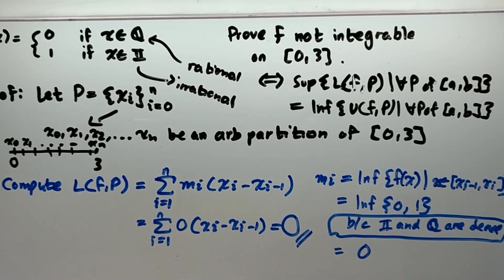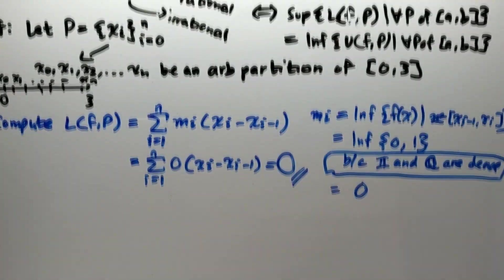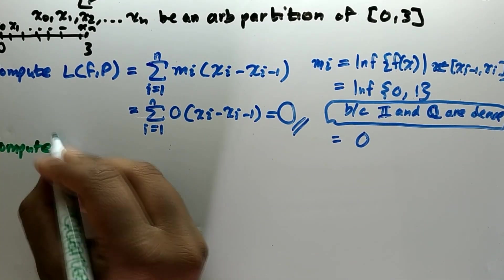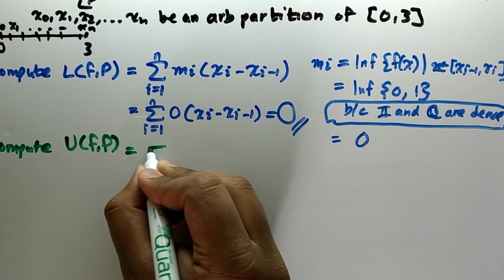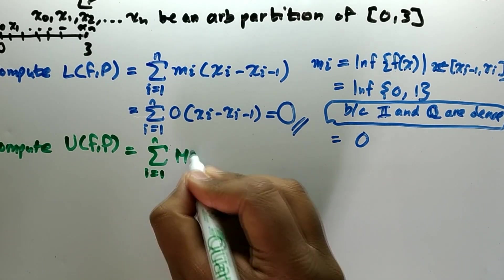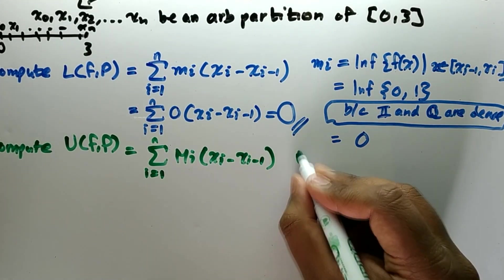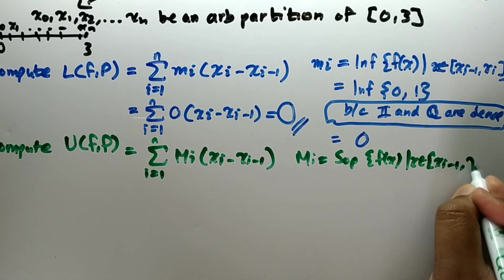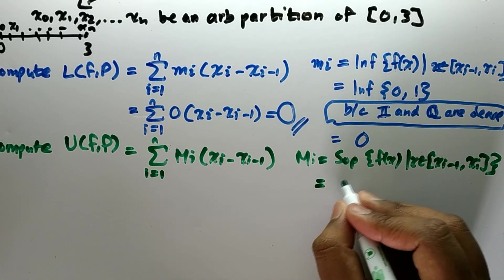Plugging m_i = 0 back into the lower sum equation, we get 0 times (x_i minus x_{i-1}), which is just 0 — it's a summation of 0 times something. Now for the upper sum, the calculation is similar except we need to find capital M_i, which is the highest possible value within the [x_{i-1}, x_i] interval.